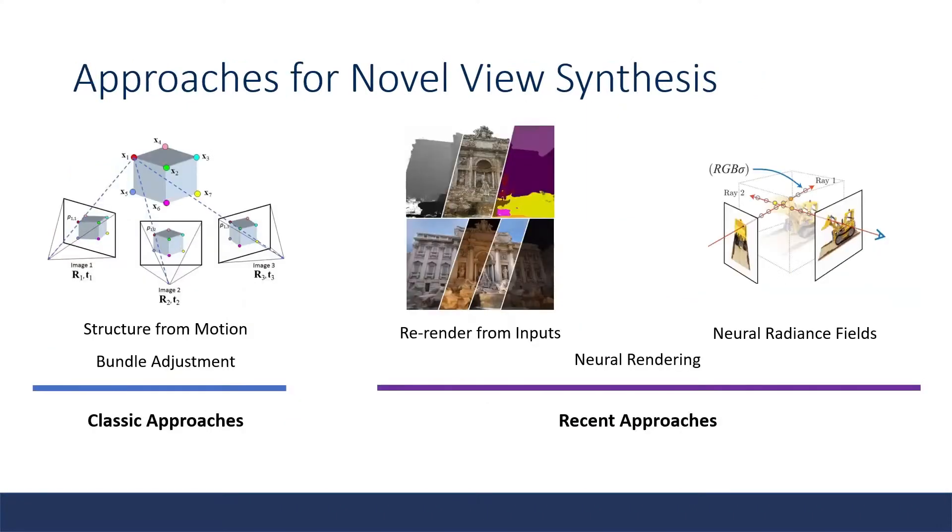Being a long-standing problem, there have been several approaches already. Some classic approaches have been structure from motion and bundle adjustment. More recently, we have neural rendering approaches, for example models that try to re-render a scene given an initial output and a reference output, as well as neural radiance fields, which tries to model the scene as a radiance field.